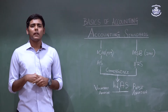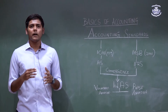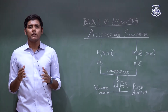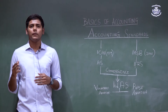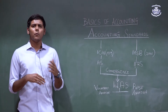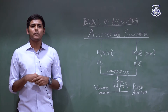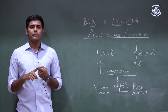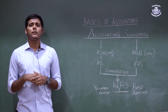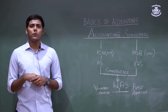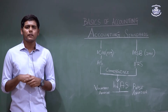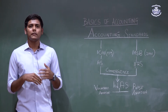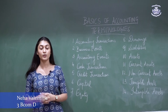Phase 2 started on the first of April 2017 and required every listed company — or a company in the process of being listed on the stock exchange — with a net worth of more than 250 crores but less than 500 crores to adopt the Indian Accounting Standards. Phase 3 started on the first of April 2018 and required all banks, insurance companies, and NBFCs with a net worth of more than 500 crores to adopt the standards. Phase 4 required all NBFCs with a net worth of more than 250 crores but less than 500 crores to adopt the Indian Accounting Standards.